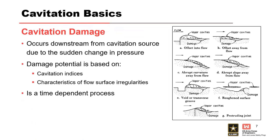Cavitation damage always occurs downstream of whatever asperity is in the flow. Unlike slab jacking, it could be offsets down, not only offsets up. An asperity in flow that creates a significant pressure drop is really the culprit for hydraulic structures. This shows some examples of what those asperities could be and where you would want to look for damage if you're trying to find cavitation.